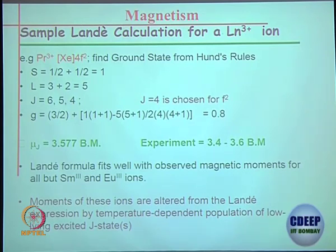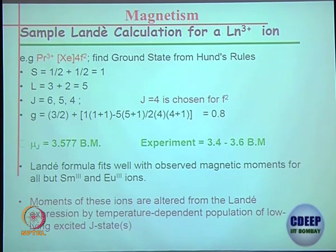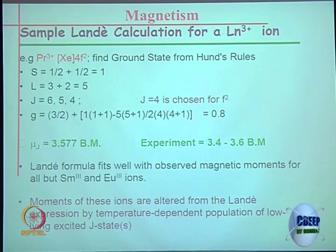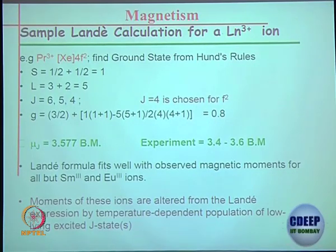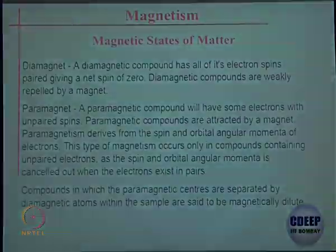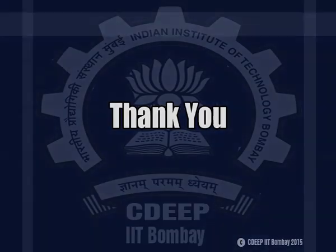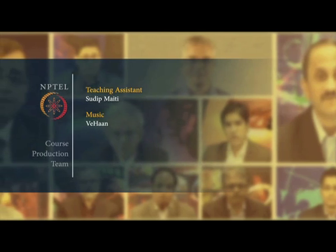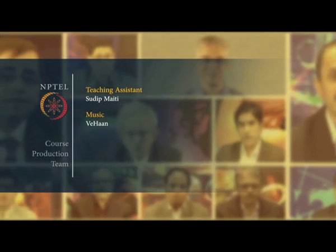This is the theoretically calculated value, and this is the experimentally observed value — they are quite close. You do not have to worry separately about orbital angular momentum because you are already accounting for it through the full L and S calculation.